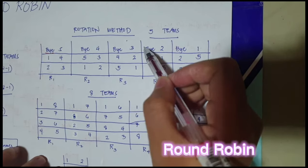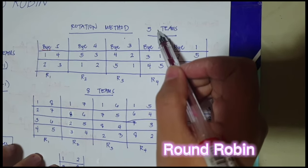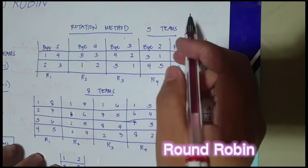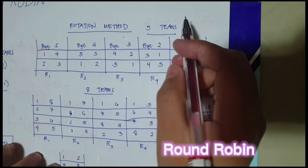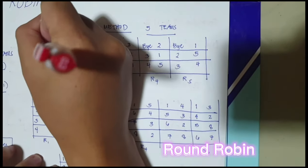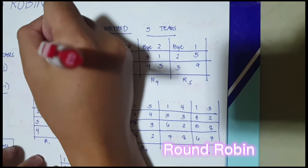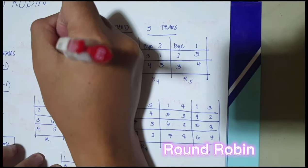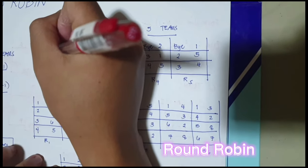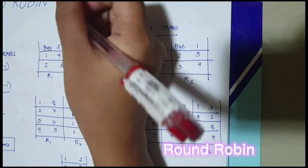So in rotation method for 5 teams, by is applicable if the number of entries or the number of teams is odd. So by here is fixed, will remain fixed, and then the other numbers rotate around it in a counterclockwise direction.